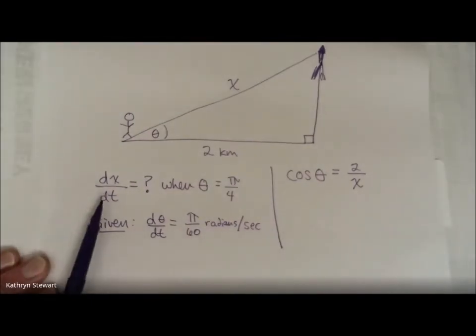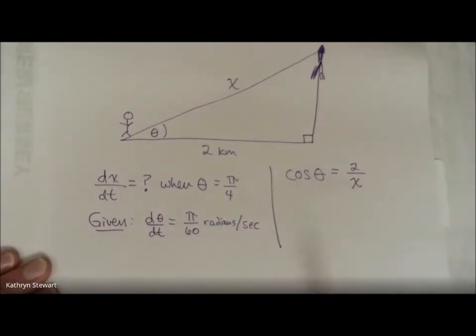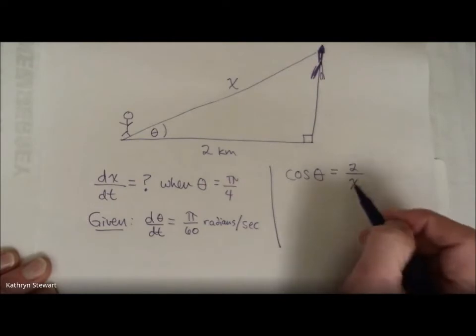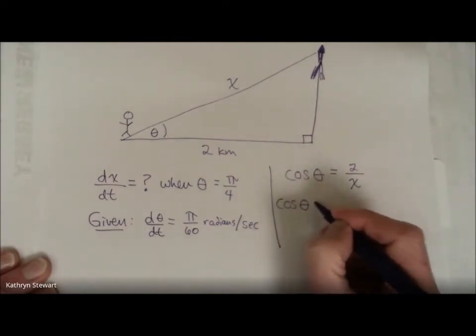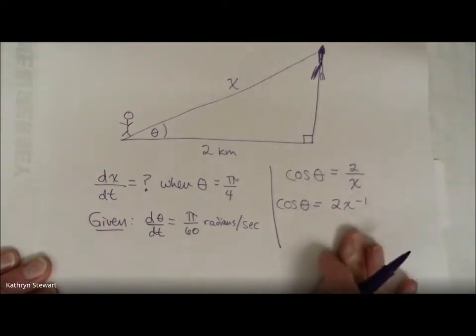What I want to know is dx/dt. Well, to get dx/dt, I'm going to have to take the derivative with respect to time. But that's a little awkward. So before I take the derivative, let me just rewrite this as 2 times x to the negative 1. That's going to make my calculus a little easier. All right, here we go.